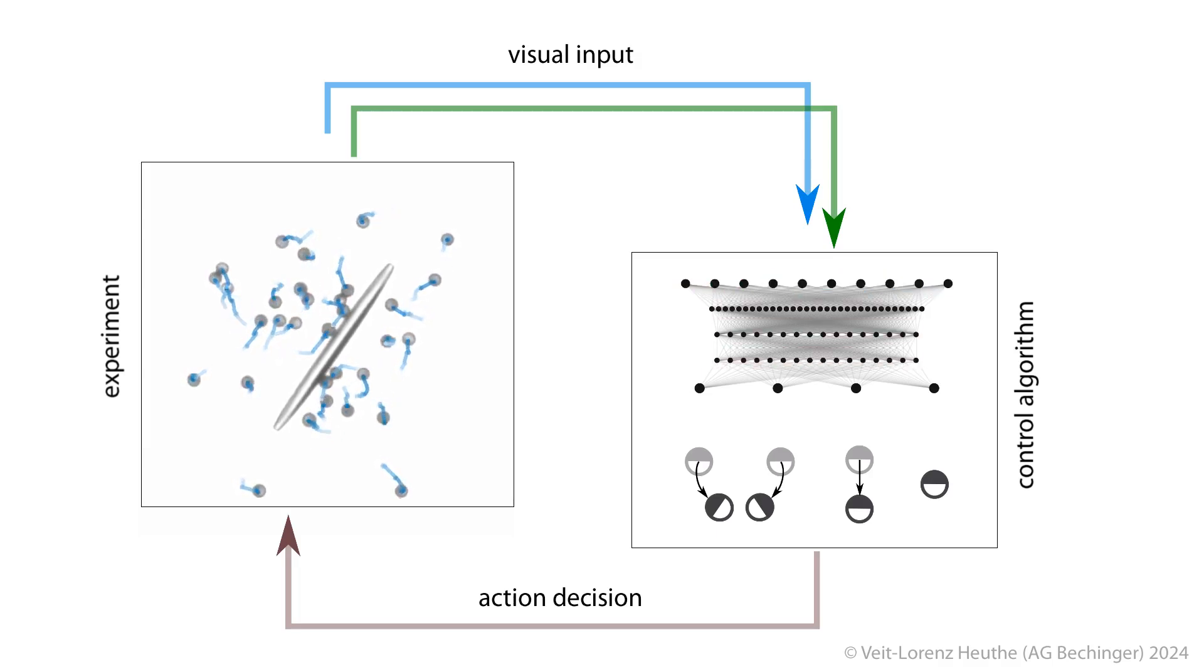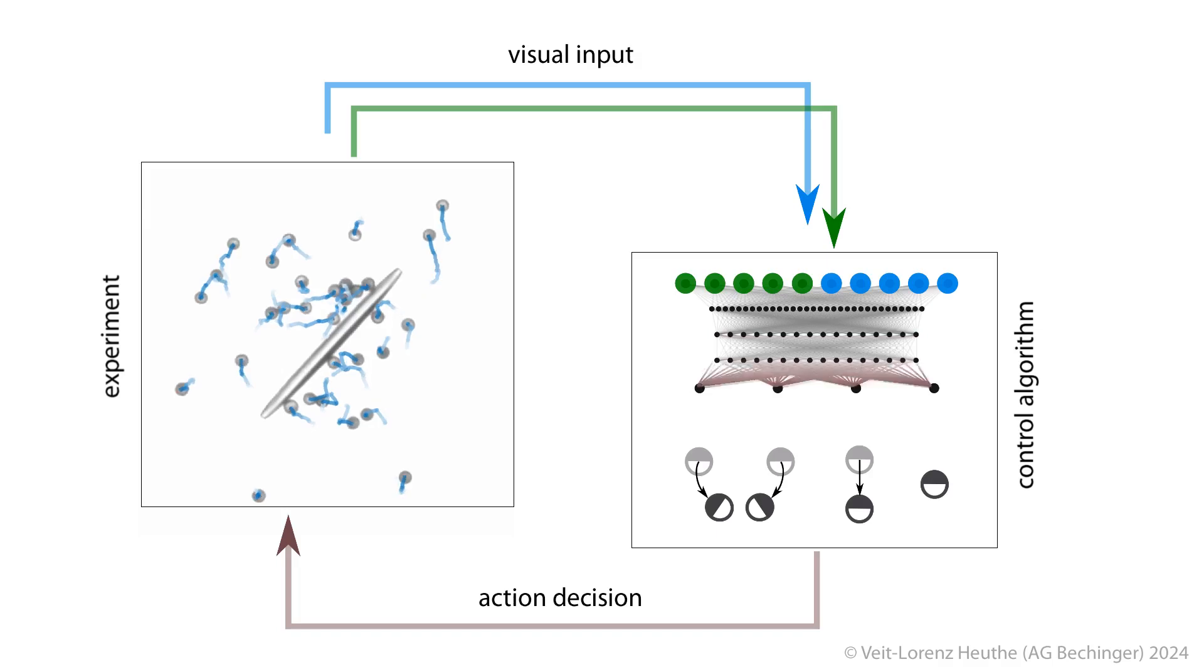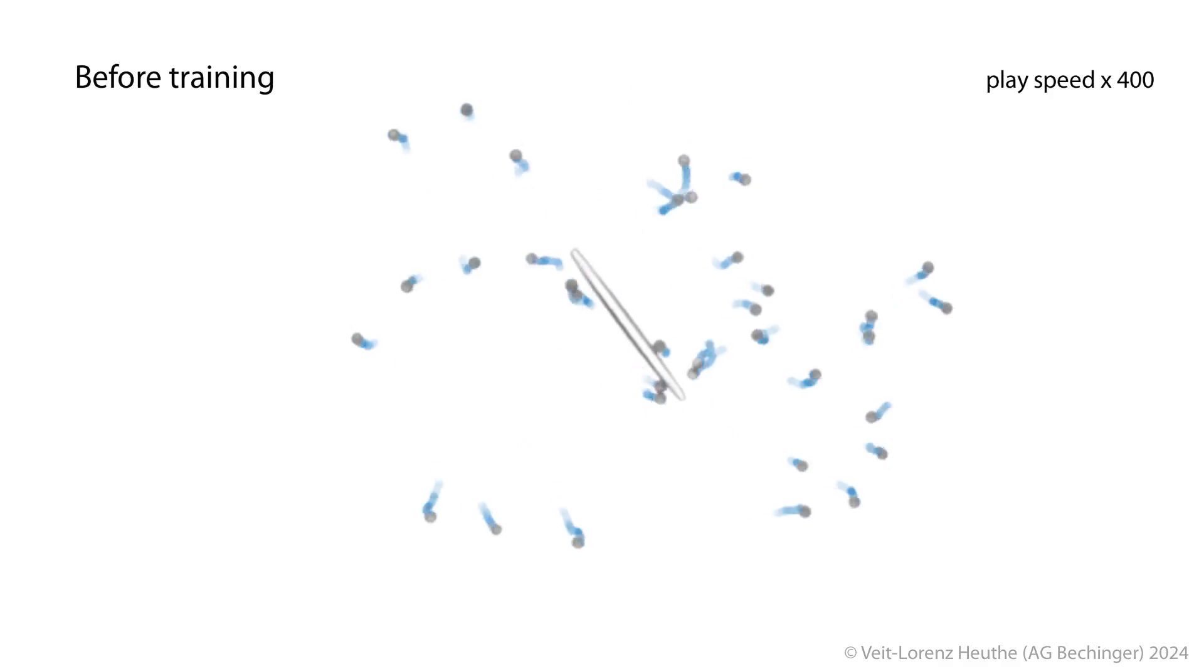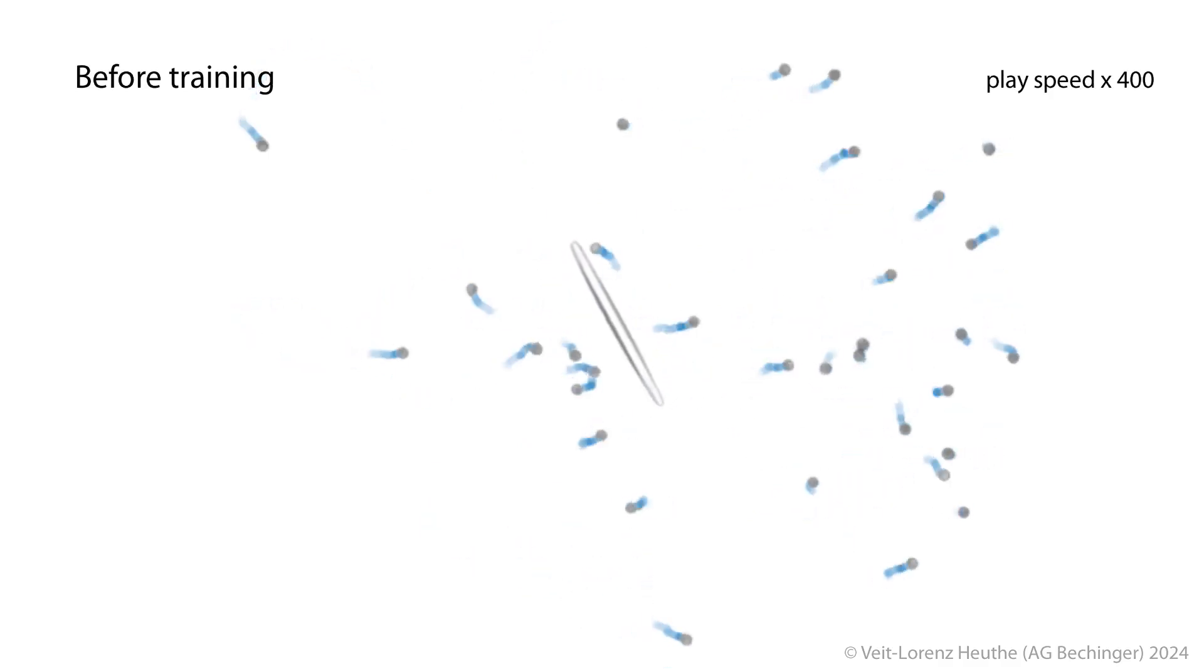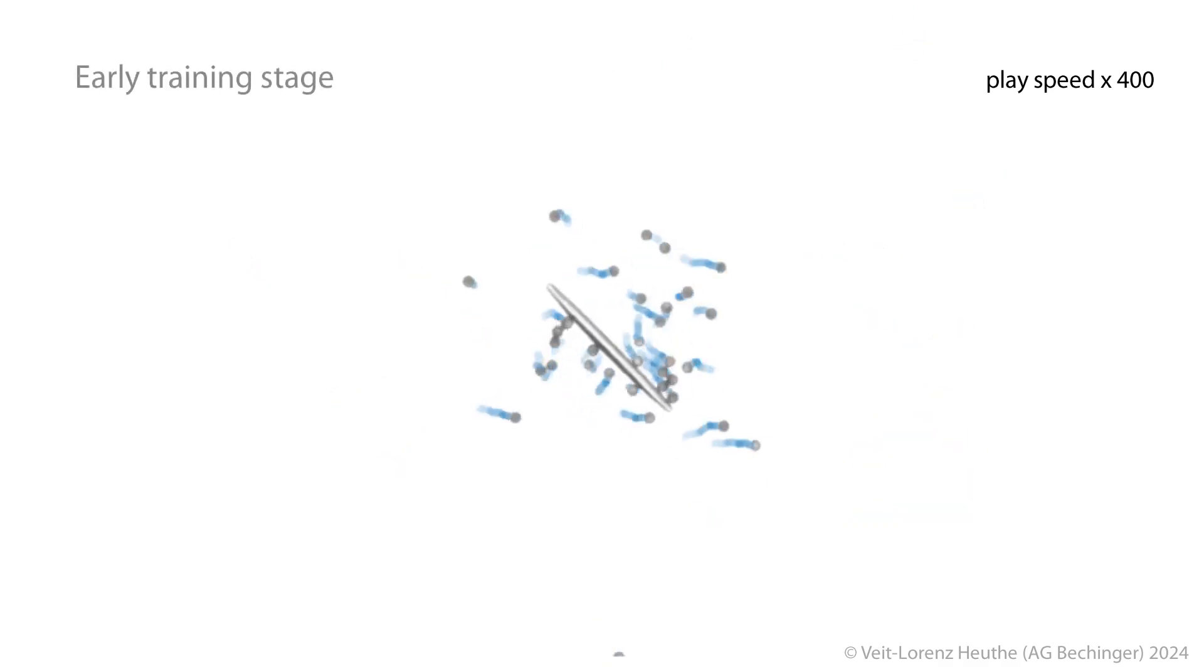This way, the micro-robot swarm can, for example, rotate this large rod, a challenge the individual micro-robots could not solve on their own. Initially, the robots move randomly, but after training, they coordinate to push the rod from opposite sides, achieving smooth, efficient motion.